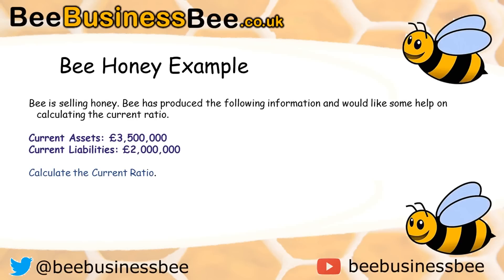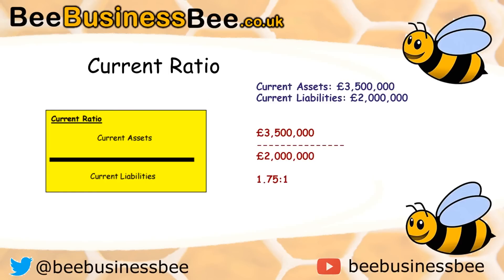On screen there is now an example you can calculate yourself — pause the video to try it. The answer is 3.5 million pounds of current assets divided by 2 million pounds of current liabilities, giving a result of 1.75:1. That means this company has £1.75 in assets for every one pound in current liabilities.